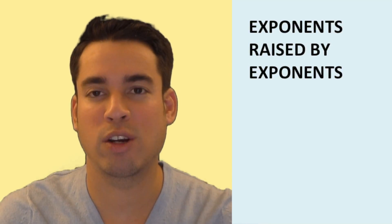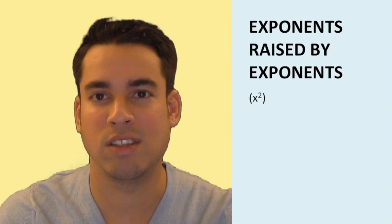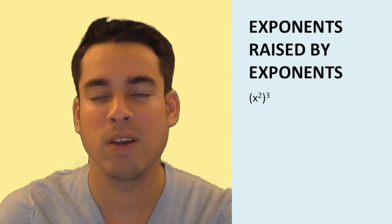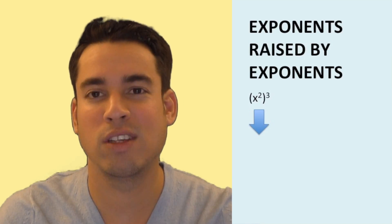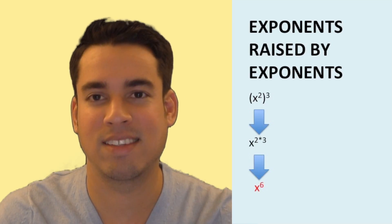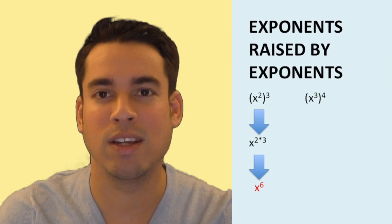Now let's talk about what happens when you have something raised to a power and then that whole piece is raised to another power. For example, x squared in parentheses raised to the third power. In this case, you multiply the exponents, so you get x to the sixth. Another example: x to the third in parentheses raised to the fourth power gives you x to the twelfth.